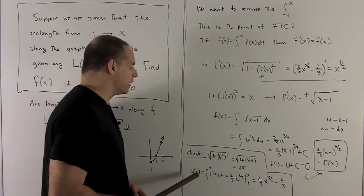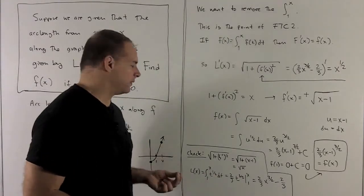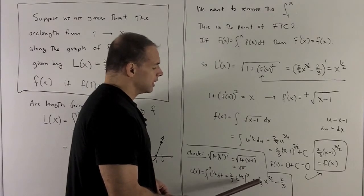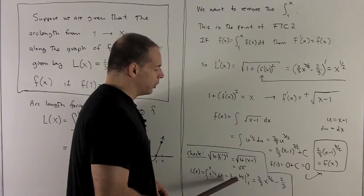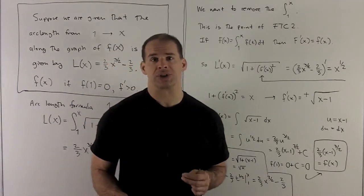We stick it into the formula for arc length. So we're going from 1 to x of t^(1/2) dt. Add 1, flip it over. Evaluate it at x and 1. Take their difference. And then what I'm going to be left with is 2/3 x^(3/2) - 2/3. And we see that our check works out.